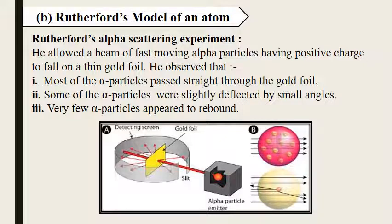Next, Rutherford came. He gave his own model. First of all, he did an alpha scattering experiment. What he did: he took a thin gold foil and allowed a beam of fast moving alpha particles having positive charge to fall on the thin gold foil.